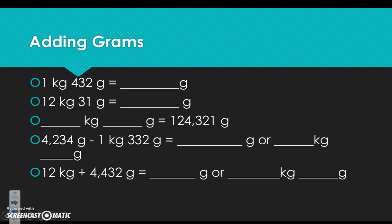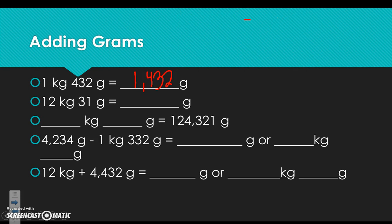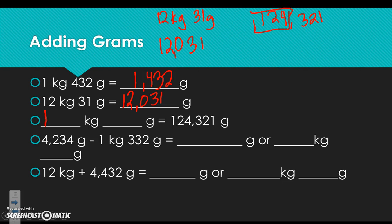Adding grams: 1 kilogram 432 grams — 1 kilogram equals 1,000 grams, so total is 1,432 grams. For 12 kilograms 31 grams, we get 12,031 grams. Going backwards: 124,321 grams — look at the thousands place to get 124 kilograms and 321 grams remaining as the base unit ones.